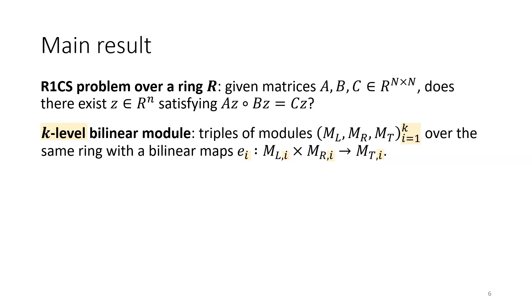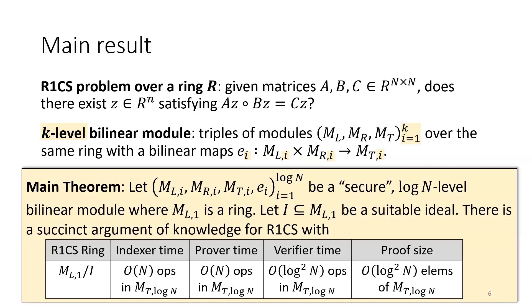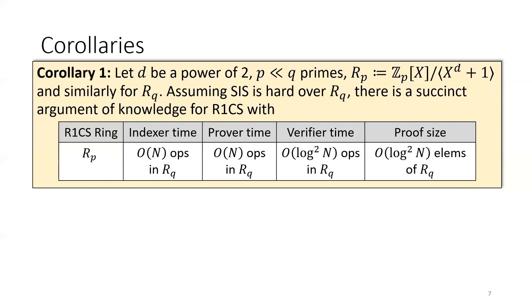We'll actually need several levels of different bilinear modules, with maps connecting them together. For an R1CS instance with matrices of size N×N, our main result is that if you have log N levels of bilinear modules, you can construct a very abstract succinct argument for R1CS over a particular ring.